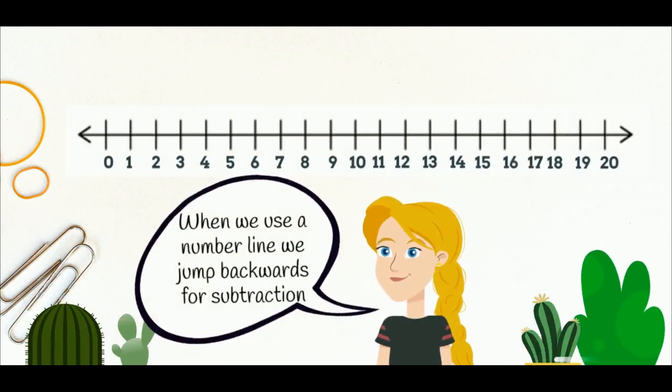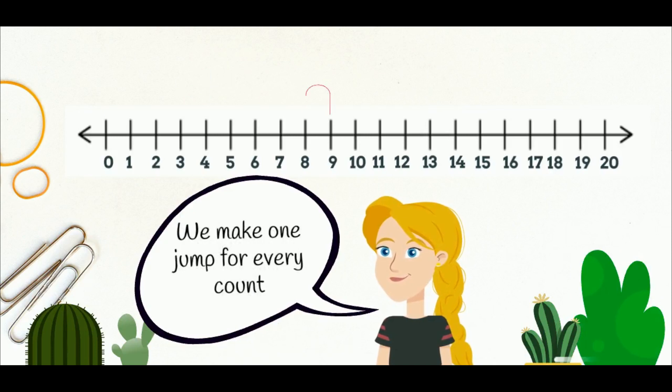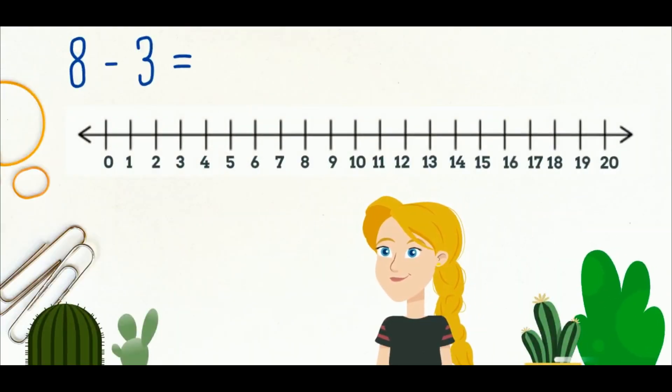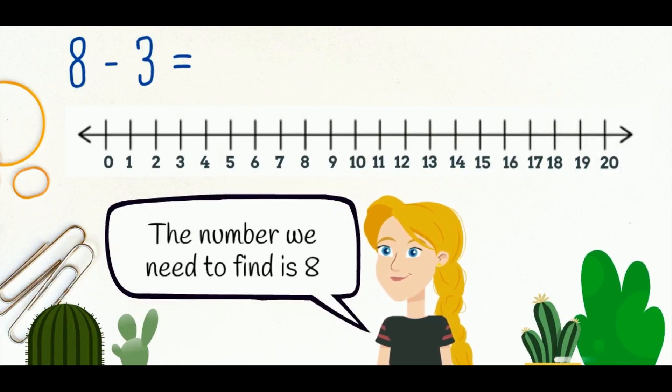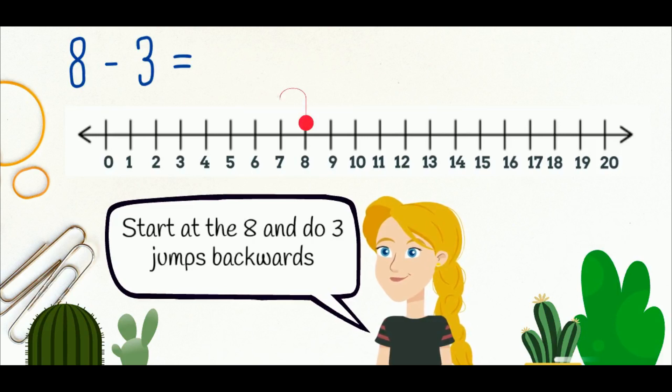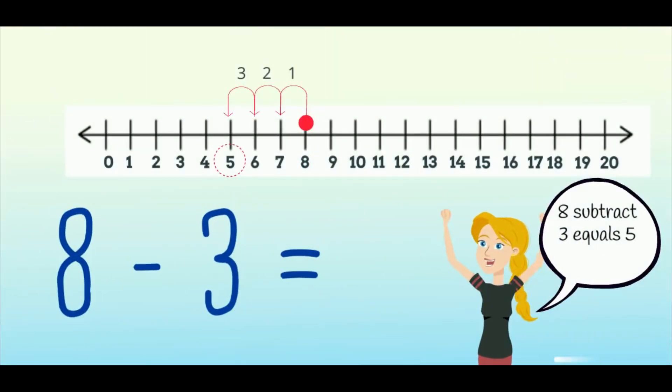When we use a number line we jump backwards for subtraction. We make one jump for every count. Let's give it a try. Eight take away three, so the whole number is eight and we are taking three away. Let's find number eight on the number line and we need to make three jumps backwards. So eight take away three equals five.